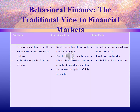The traditional view divides financial market efficiency into three forms. The weak form states that historical information is available, and future prices of stocks cannot be predicted. The semi-strong form states that stock prices adjust to all publicly available information, and only insiders can earn profit. The strong form states that all information is fully reflected in stock prices, meaning financial analysis and insider information are of little or no value.